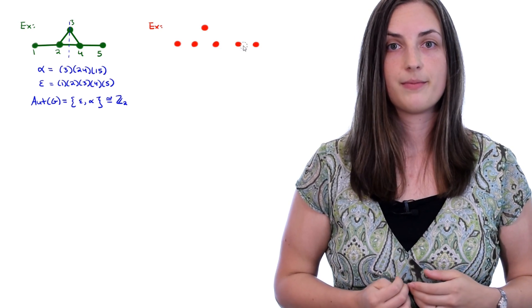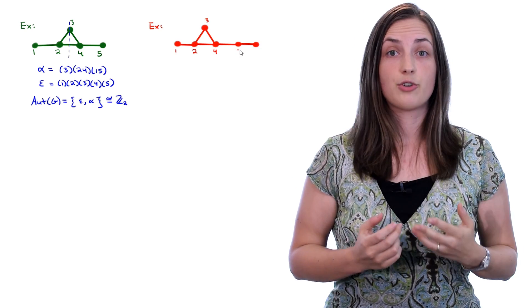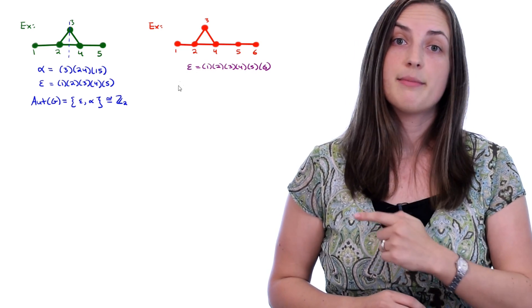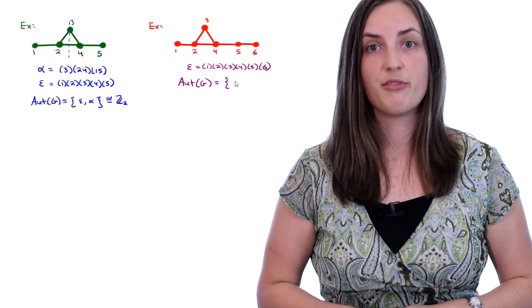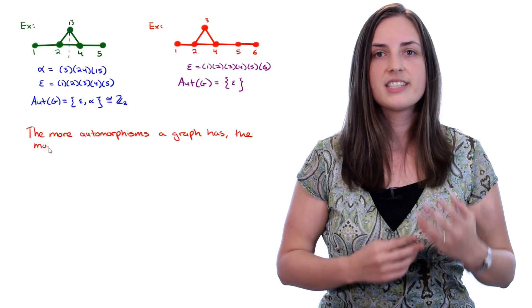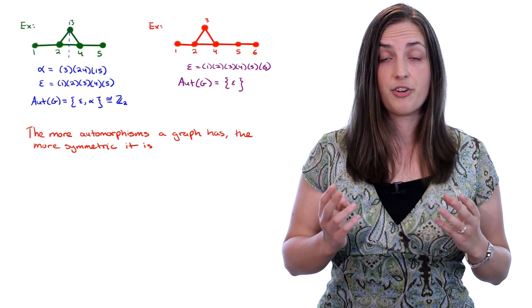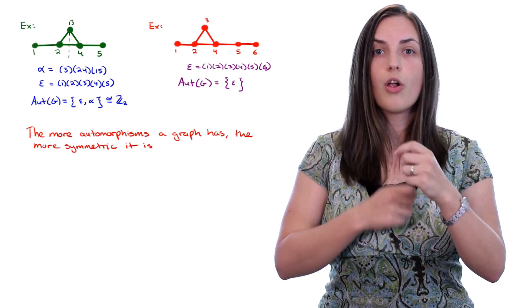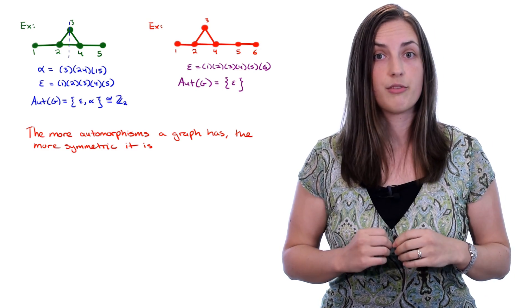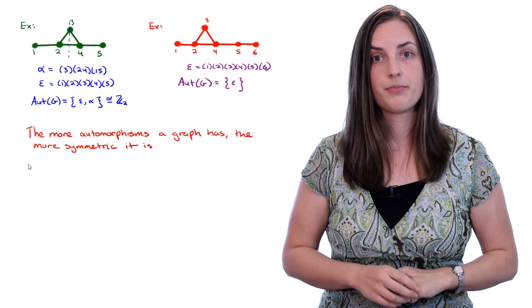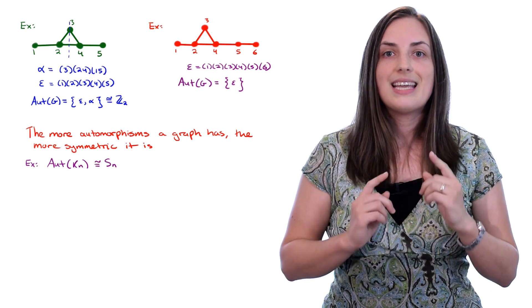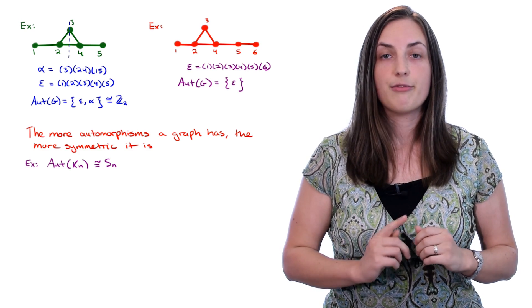Let's try another example. Here we have a red graph on these 6 vertices. We notice that there's not a lot of symmetry happening here, and in fact the identity map is the only automorphism of this example. We observe that the more automorphisms a graph has, the more symmetries it has. So the most symmetric a graph could get is the example of a complete graph, where all of the edges exist. That means that any possible permutation, and there are n factorial of those, is an automorphism. In other words, the automorphism group of the complete graph on n vertices is isomorphic to the symmetric group of order n factorial.